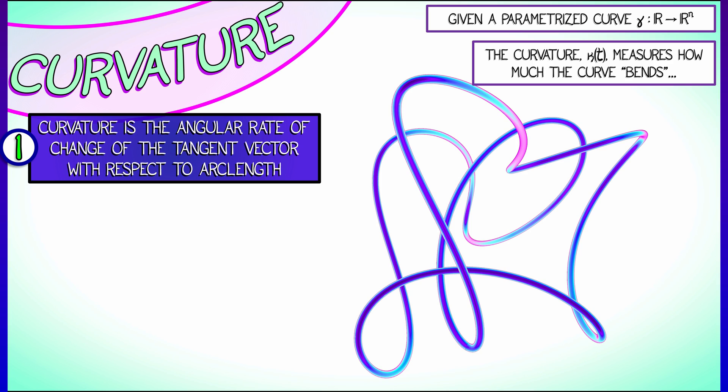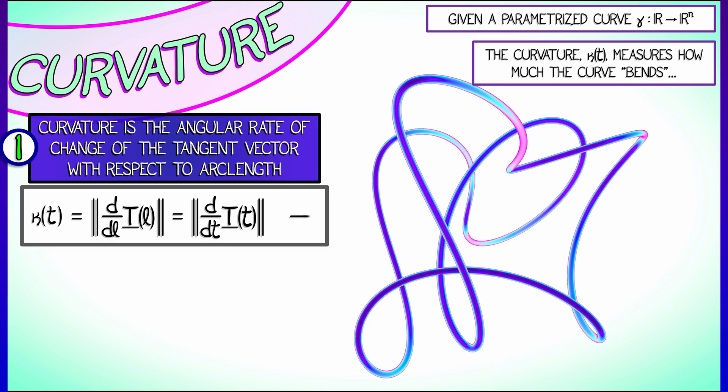Here's a more formal definition. It is the angular rate of change of the unit tangent vector with respect to arc length L of the curve. So kappa of t can be defined as the length of the rate of change of the unit tangent vector with respect to arc length L.